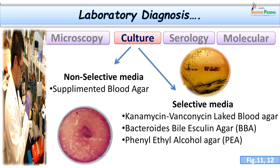Coming to culture, which is very important though not easy — it must be done carefully and identification done skillfully. We have two sets of media: non-selective media and selective media. Non-selective media should be used when growing organisms from sterile sites — for example, supplemented blood agar containing neomycin, hemin, and vitamin K. Among selective media: kanamycin-vancomycin laked blood agar (KVLB), Bacteroides bile esculin agar (BBE), and phenyl ethyl alcohol agar. On BBE agar, Bacteroides fragilis produces dark-colored colonies because it hydrolyzes esculin.